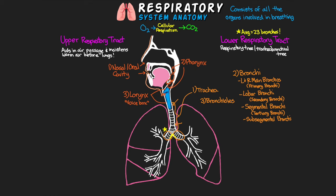Bronchioles are the smaller branches of the respiratory tract and no longer contain hyaline cartilage — they rely on support from elastic fibers attached to the surrounding lung tissue. They have epithelial cells without glands, surrounded by smooth muscle, and continue to branch through many levels of conducting bronchioles, ending in terminal bronchioles. These terminal bronchioles mark the end of the conducting zone, after which we enter the respiratory zone, consisting of even smaller respiratory bronchioles.